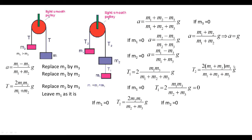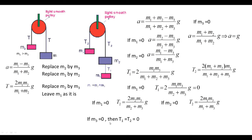When m2 equals 0, T1 becomes 2·m1·m3/(m1 plus m3)·g. Following the guideline (replace m2 by m3, leave m1 as is) in the T1 expression gives 2·m1·m3/(m1 plus m3)·g — matching. Also, when m2 equals 0, T1 should equal T2 since it becomes a simple two-block system. When m3 equals 0, both T1 and T2 equal 0, since there is no opposing block.